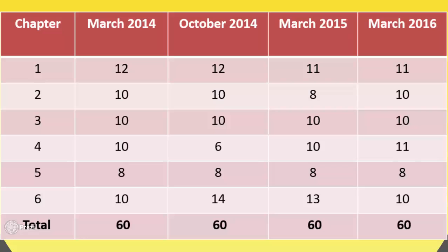Chapter 6: in March 2014 it had 10 marks, in October 2014 it had 14 marks, in March 2015 it had 13 marks, and in March 2016 it had 10 marks. So, we have total marks in March 2014 as 60, and in October 2014, March 2015, it has 60 marks.